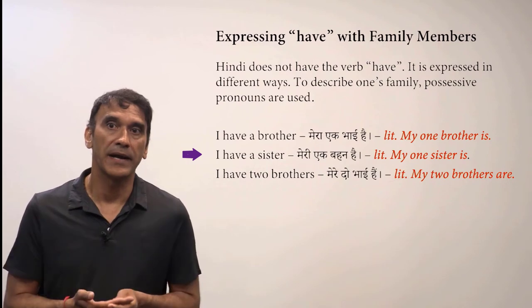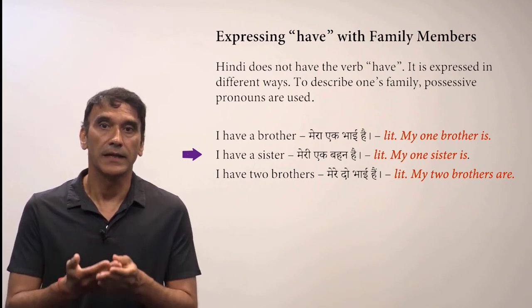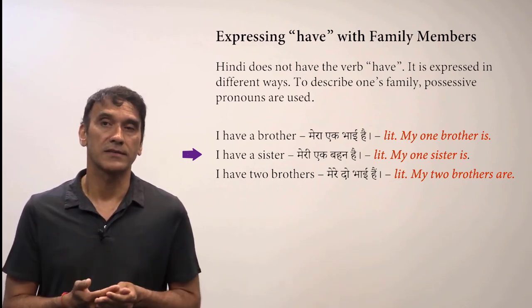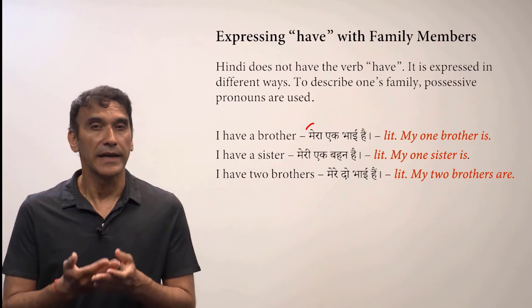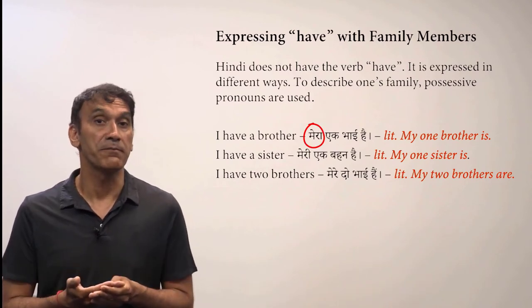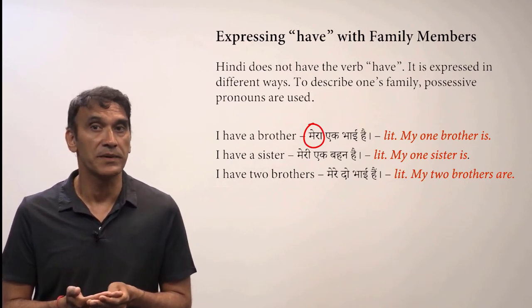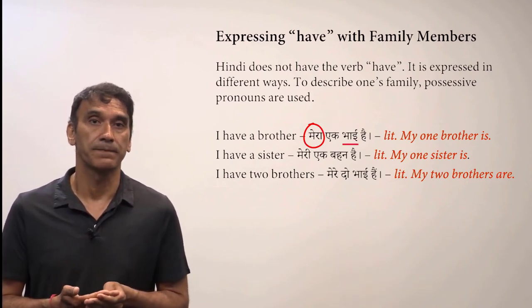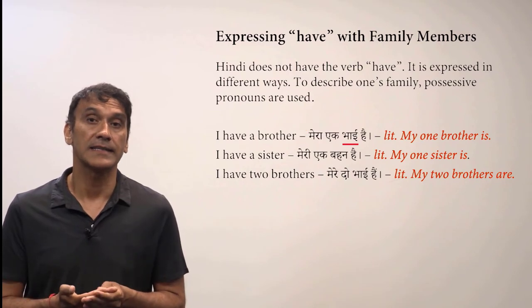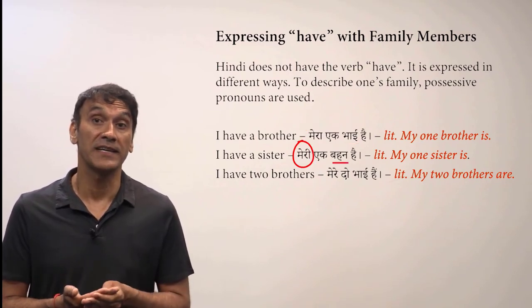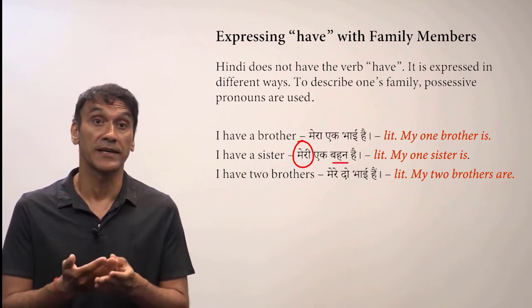Let's take another example: 'I have a sister' — meri ek behen hai. The literal word order is 'my one sister is.' In the first sentence, the masculine possessive mera is used because bhai is masculine. In the second sentence, the feminine possessive meri is used because the noun behen (sister) is feminine.